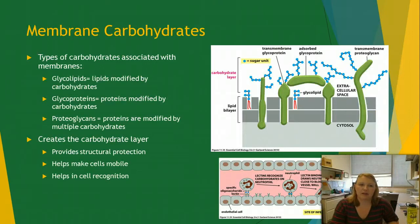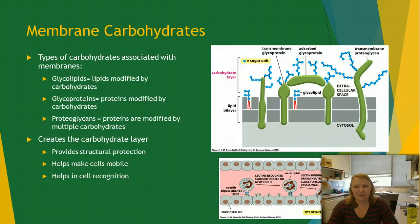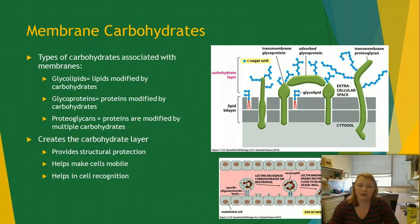Lastly, let's talk about membrane carbohydrates, which are just as important as proteins. They mostly modify other molecules within the membrane. We have glycolipids, which are lipids modified by carbohydrates; glycoproteins, which are proteins modified by carbohydrates; and proteoglycans, which are proteins modified by a large number of carbohydrates. These can provide structural protection by creating a carbohydrate layer on the outside of the cell, and can also make cells slippery to help them move — as shown in the example of a cell moving between other cells.